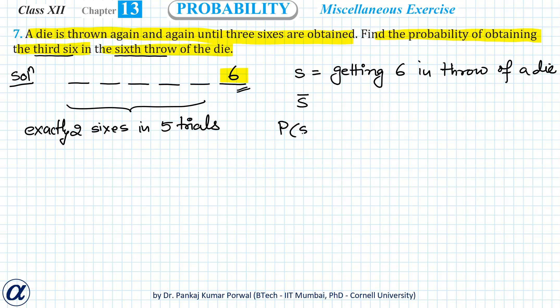So probability of getting six will be 1/6 because there are total six possible outcomes for a throw of a die, so probability of s̄ will be 1 - 1/6, that is 5/6.